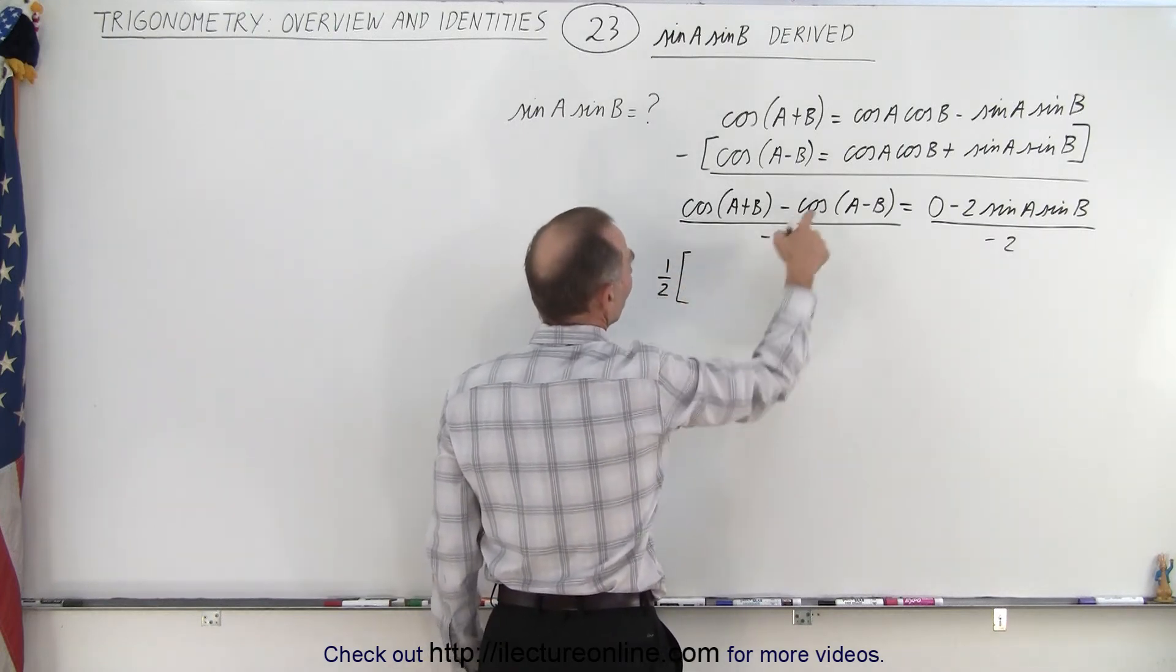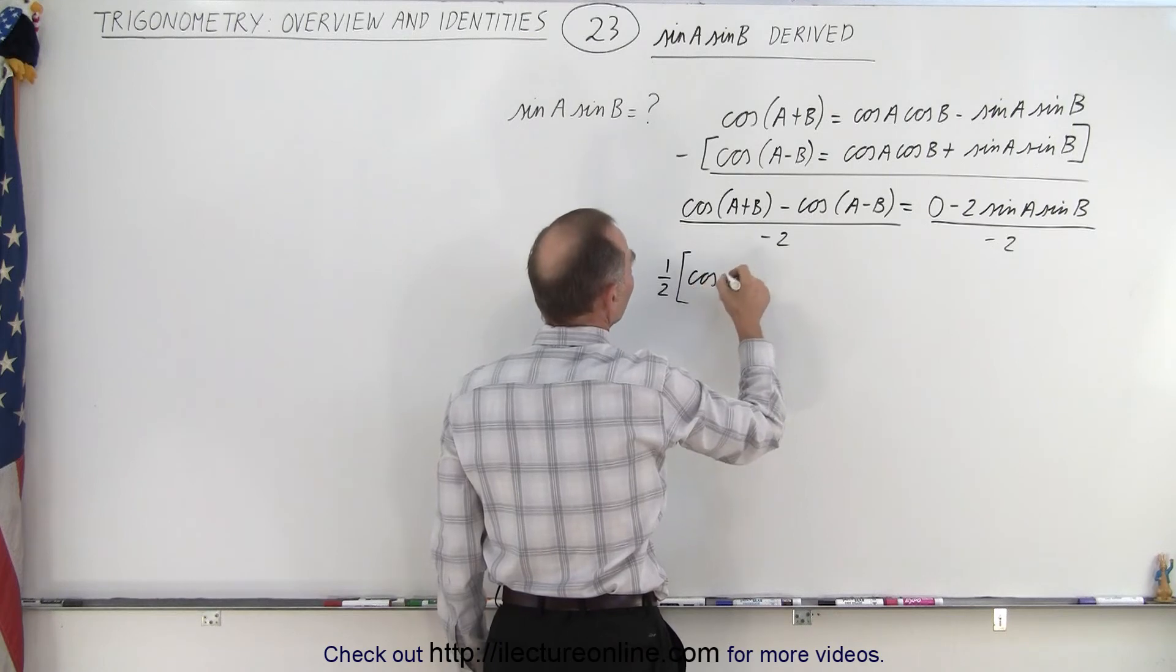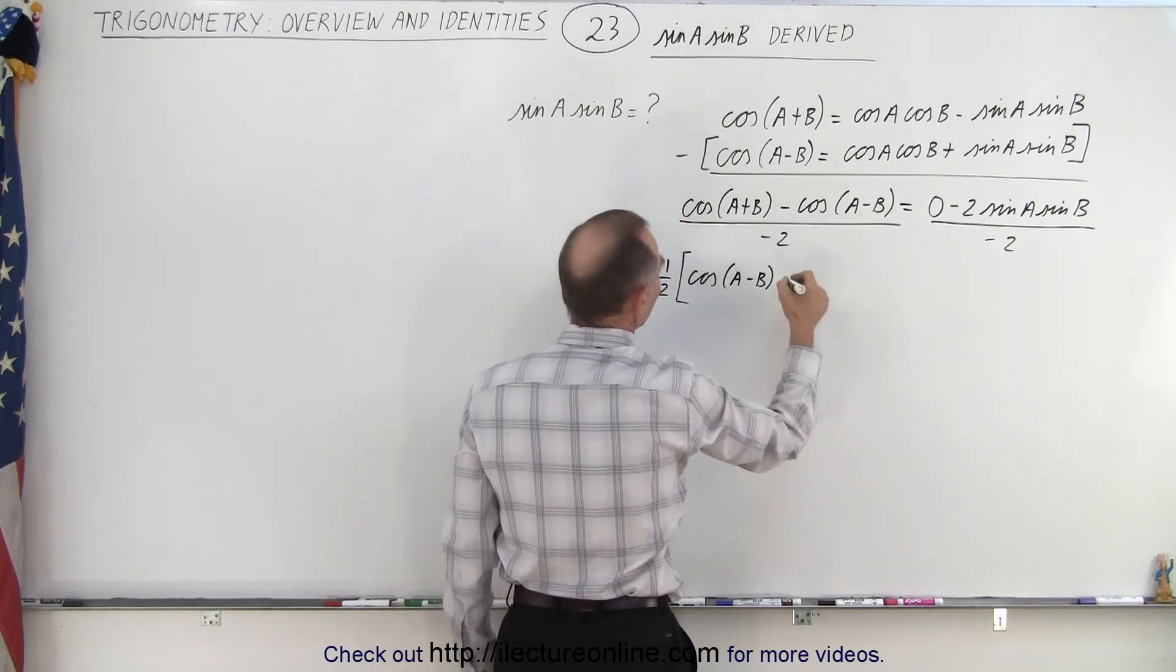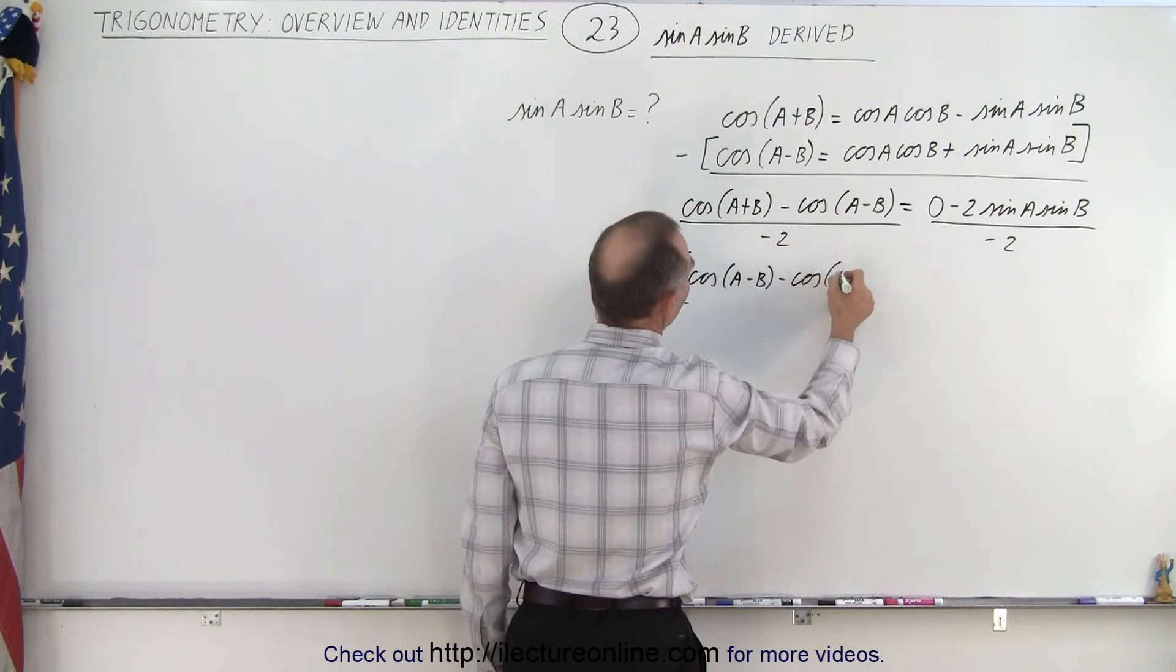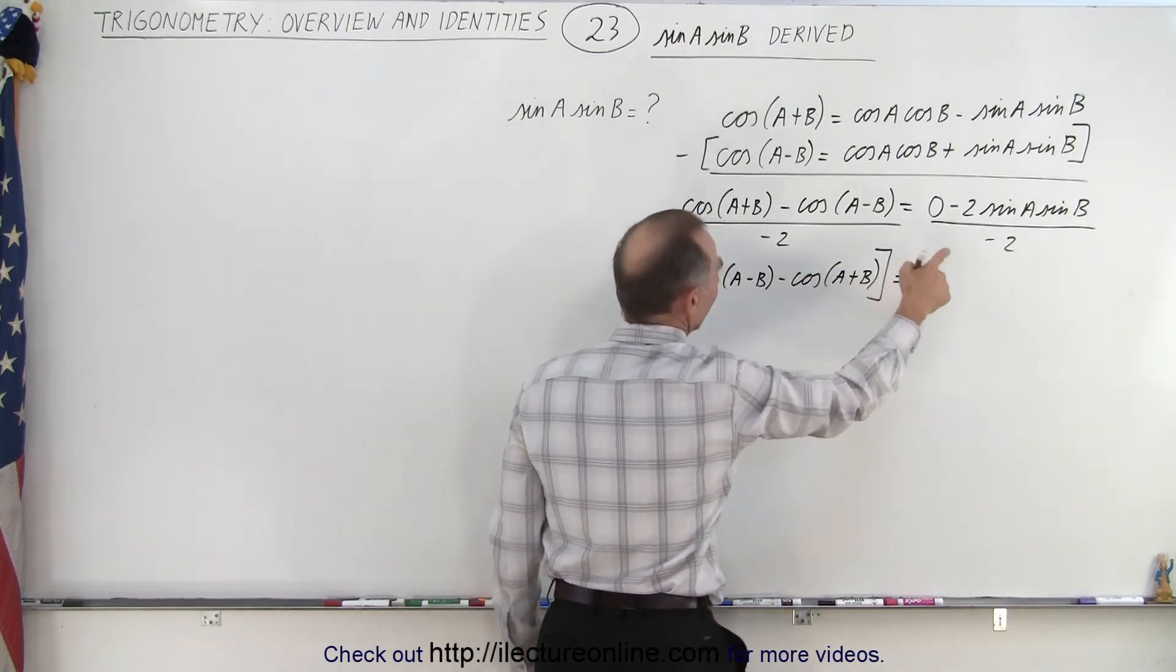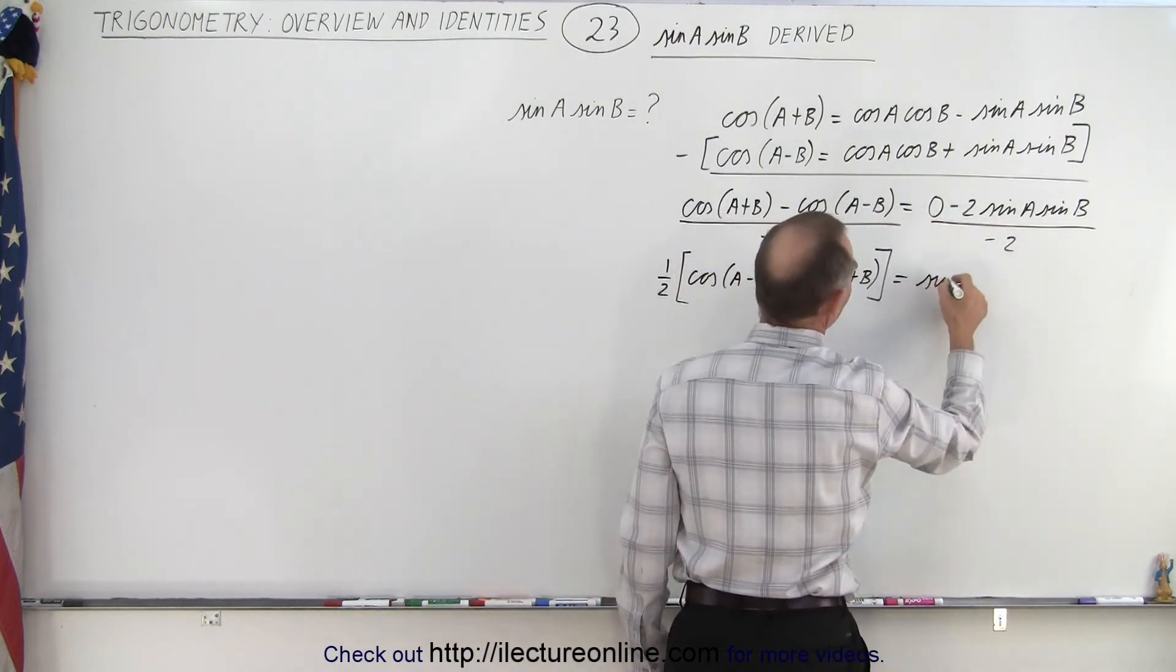we'll write this one first as positive, the cosine of a minus b, and this becomes minus the cosine of a plus b, and that equals sine a sine b.